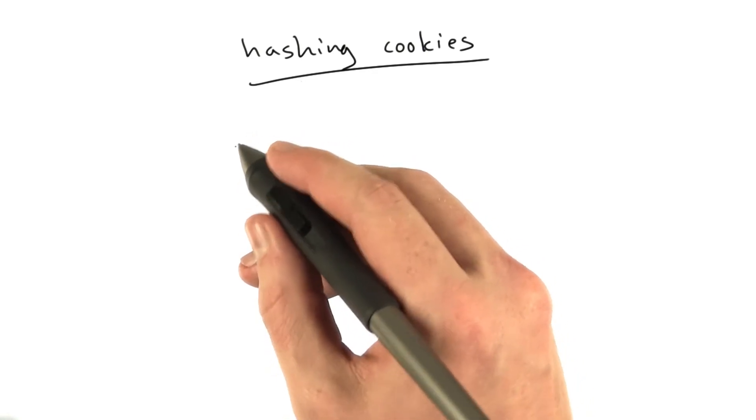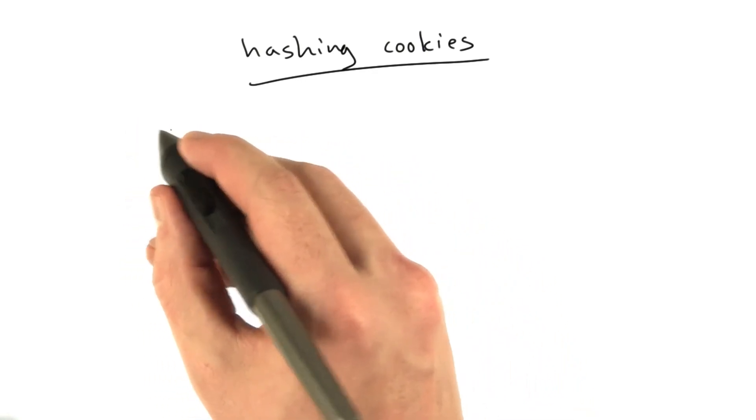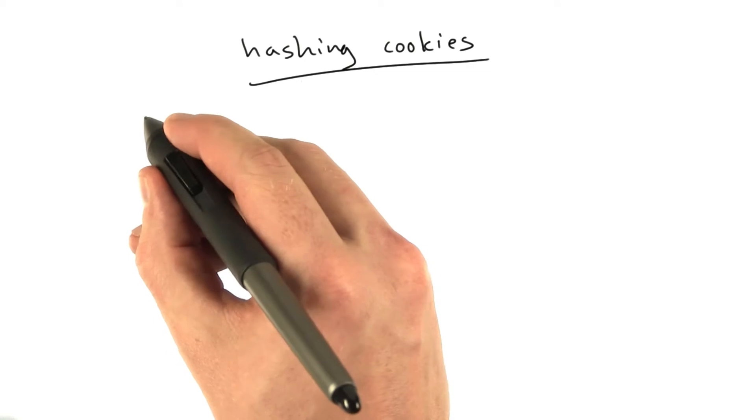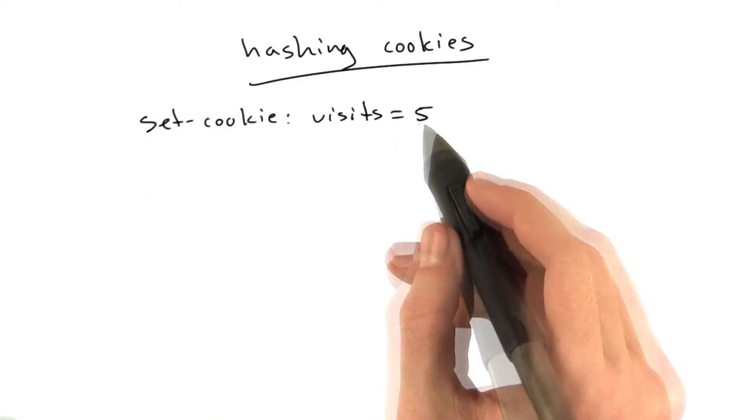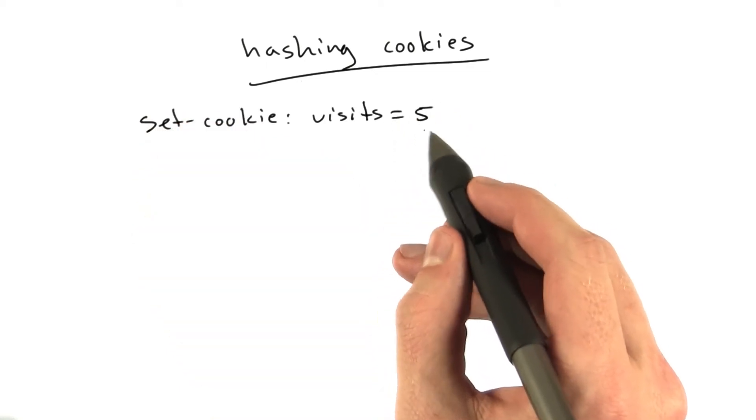And the algorithm's going to look something like this. So instead of just saying set cookie visits equals 5, which anybody can edit, we're going to add a hash to this.